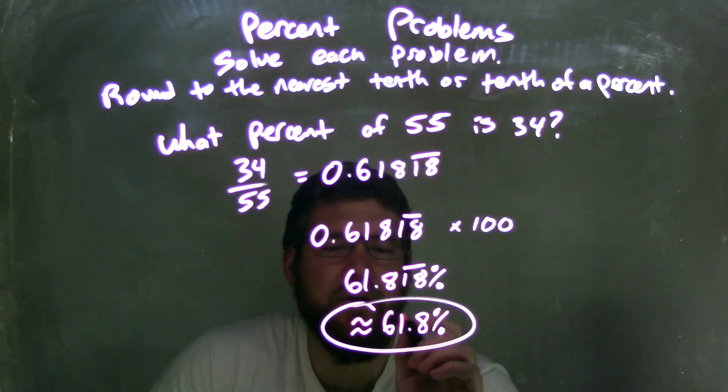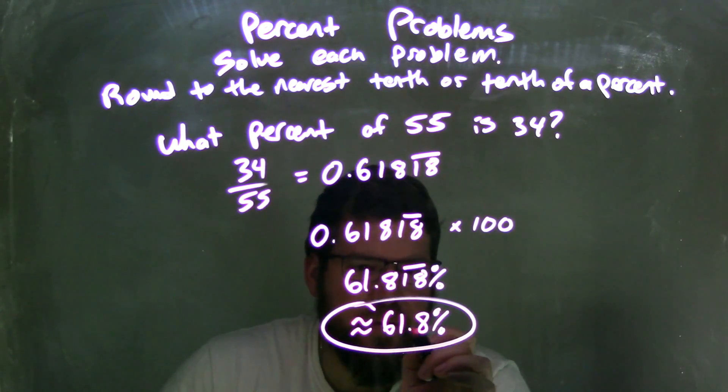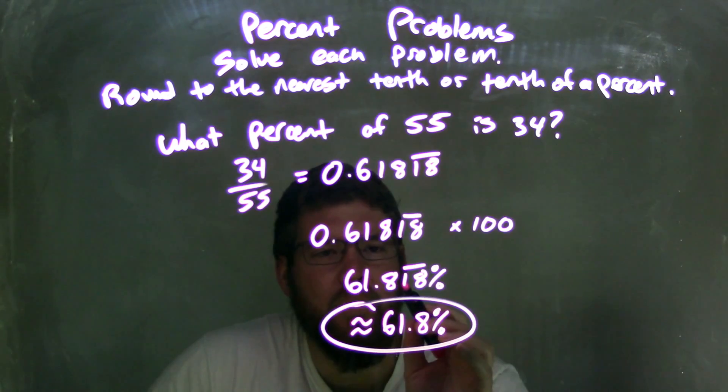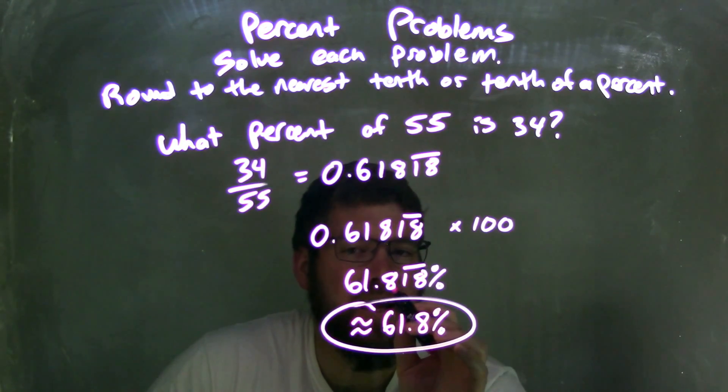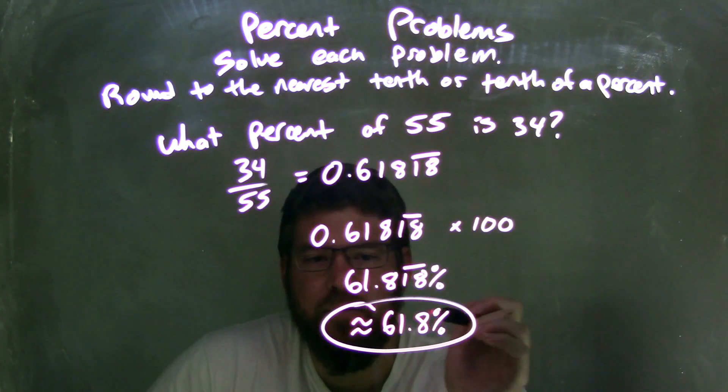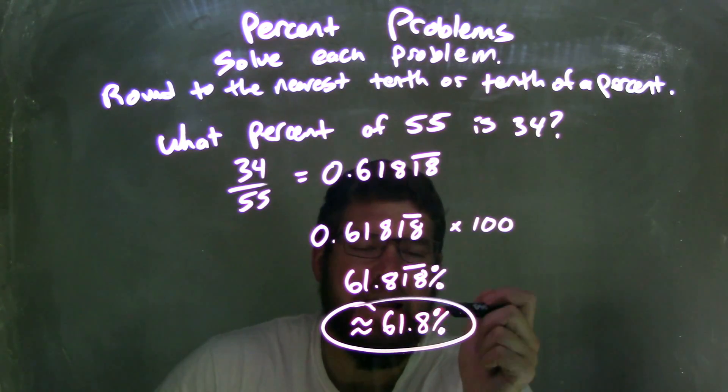From there, I had to round to the nearest tenth, so I look at the 8 right here, I look to the right of it, and it's a 1. That 1 causes the 8 to stay an 8, it rounds down essentially. And so we're left with our final answer, which is approximately 61.8%.